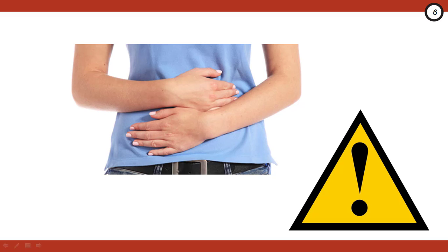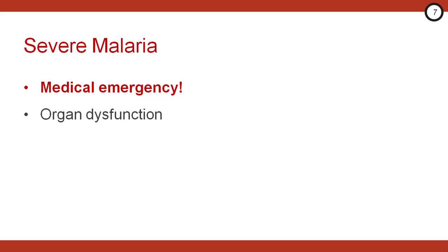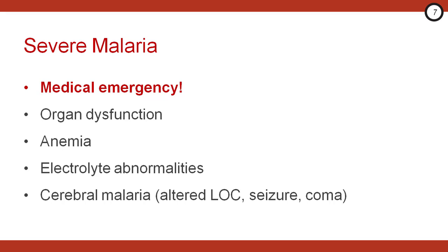On the other hand, if your patient has jaundice and an elevated bilirubin, that's a pretty big clue that it might be severe malaria. Severe malaria is a medical emergency. These patients may have significant organ dysfunction, including shock, renal failure, or ARDS. They may have anemia, spontaneous bleeding, jaundice, or DIC. There may be electrolyte abnormalities, severe hypoglycemia, or cerebral malaria, which may present with impaired consciousness, recurrent seizures, and even coma.